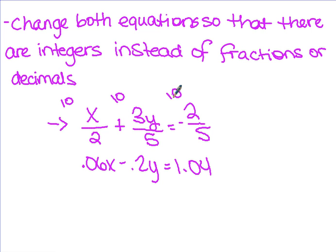Now I can cross cancel and get rid of my denominator. 2 cross cancels with 10 to give me 5. 5 cross cancels with 10 to give me 2. And the same with the last term. So when I put those terms back in, my new equation is 5x plus 6y equals negative 4. Now I have all integers instead of fractions.